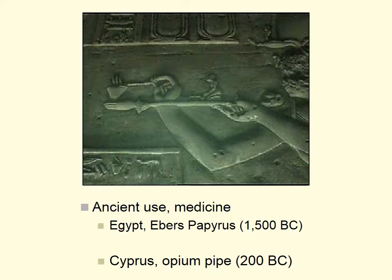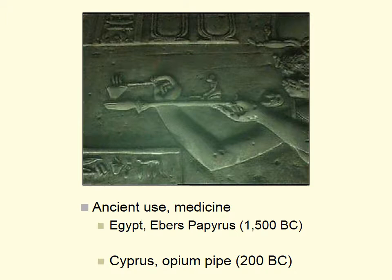This history is truly ancient. Going back thousands of years BC, we can see evidence of opium in medicine. For instance, the Ebers Papyrus, dated to about 1500 BC, is a pharmacopoeia that includes records of how to prepare and administer opium. It could be smoked — there's a relief carving from a temple in Cyprus dated to about 200 BC showing someone smoking a substance. From this and other archaeological finds we know people in the ancient world were using opium for medicinal purposes.